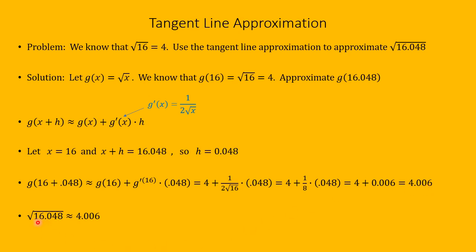Our approximation is that the square root of 16.048 is about 4.006. If we type this into a calculator, we would find something like 4.005995. This approximation is quite accurate because the value of h was quite small, and the function g of x equals the square root of x is differentiable and doesn't change by great amounts for slight variations in x.